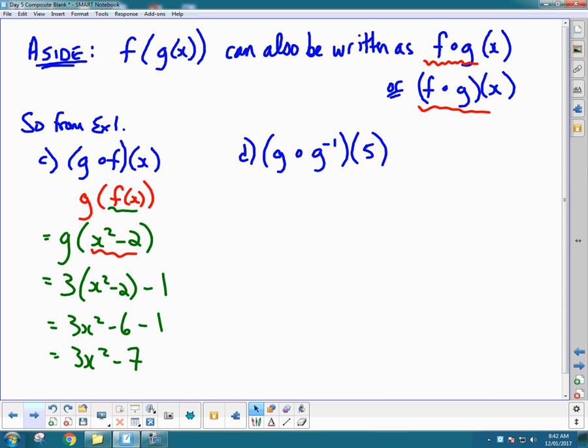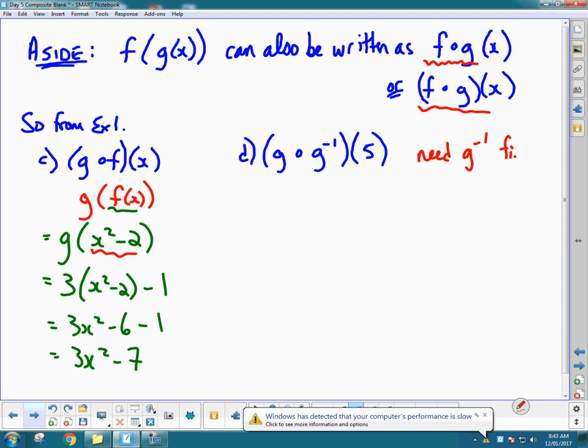Now d looks even more different. This is a composite of g and its inverse. If you remember, this notation here, the g to the negative one, is a way to do your inverse, and an inverse is something you did in grade 11. The inverse is, remember when you take the x's and y's and you switch them? So before I can do a composite of these functions, I need g⁻¹ first.